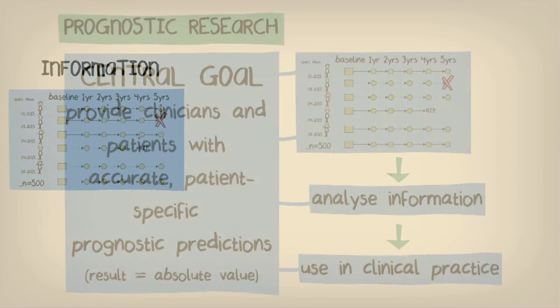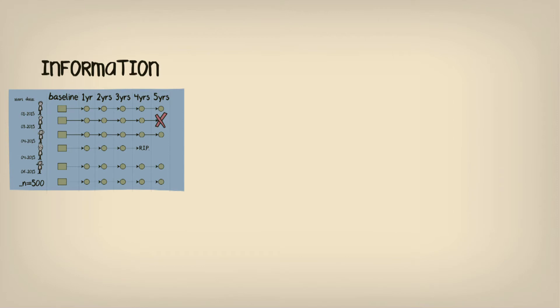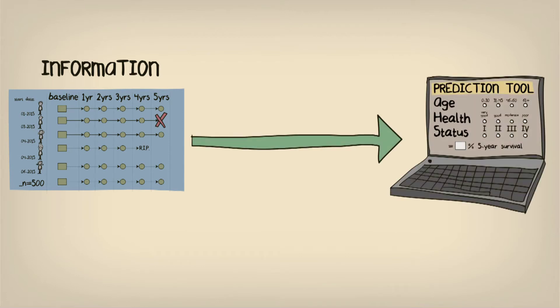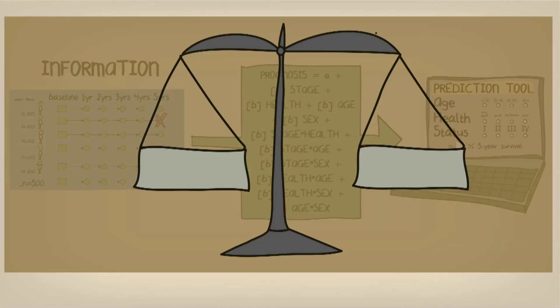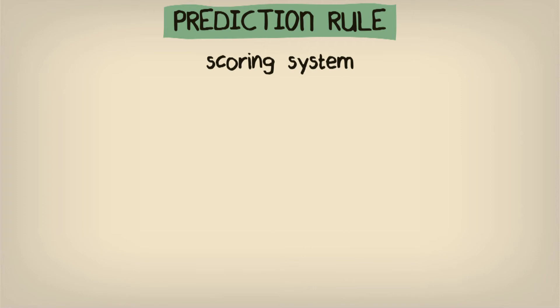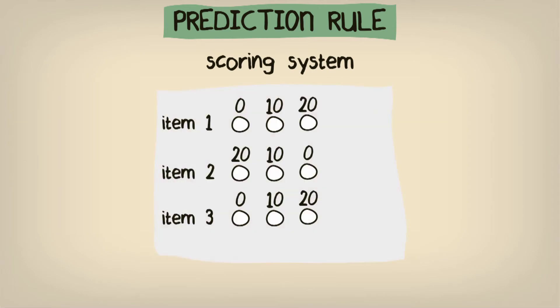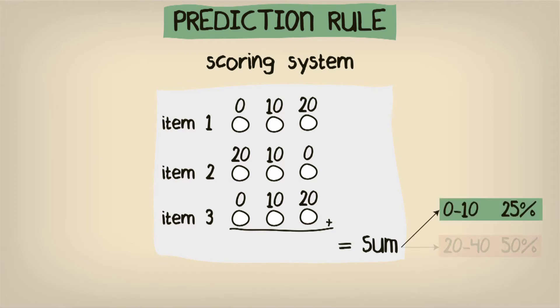Commonly, the information collected in prognostic studies is used to develop a clinical prediction rule, usually based on some kind of multivariable regression model. These models can be as simplistic or complex as needed, and often must strike a balance between prediction accuracy and practicality. A prediction rule generally consists of a scoring system where different patient characteristics receive a score, and the sum of these score values then corresponds to a predicted risk of a certain outcome over time.